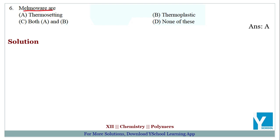The question is: melmoware are thermosetting, thermoplastic, both A and B, or none of these? The answer is thermosetting polymer. Melmoware are thermosetting polymers which come under the category of melamine formaldehyde resin polymers.